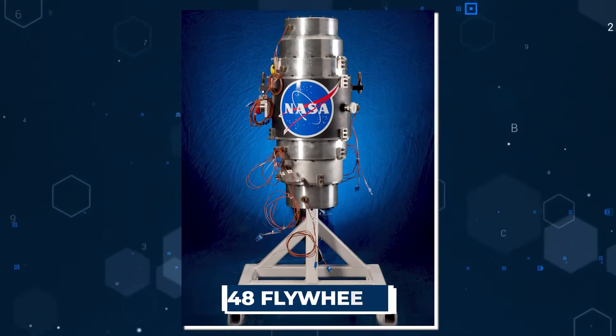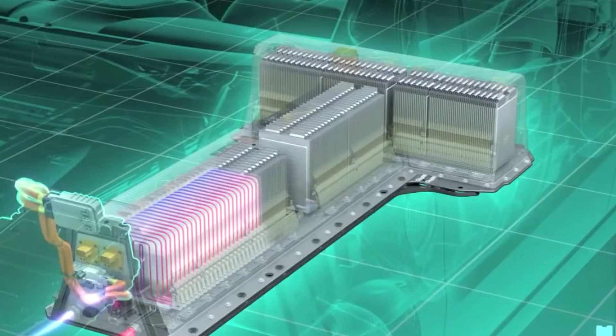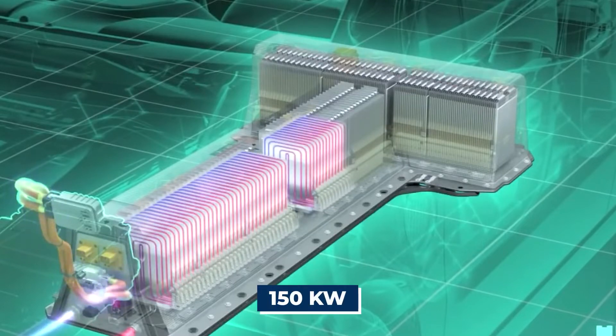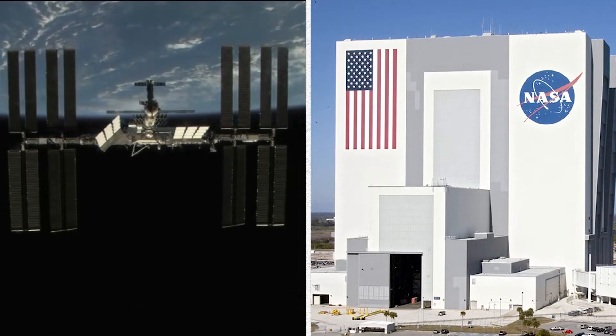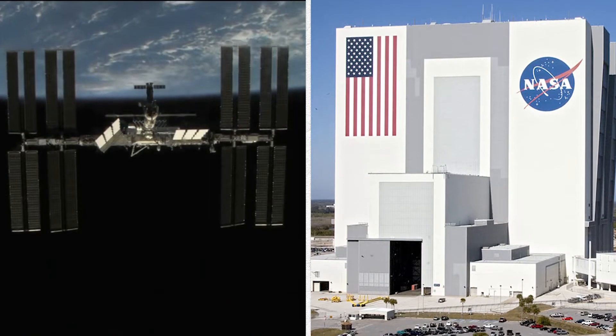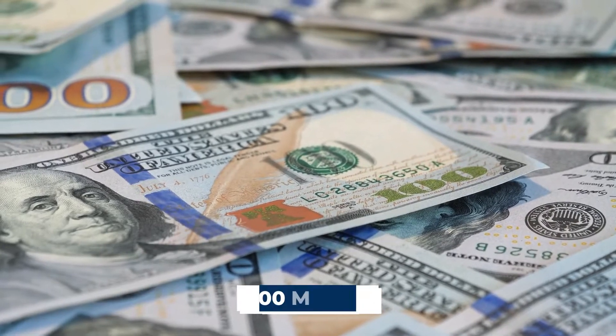Each NASA flywheel device can store more than 15 megajoules and deliver more than 4.1 kilowatts of peak power. It will require 48 flywheels, capable of producing more than 150 kilowatts to replace all of the battery boxes. NASA estimates that replacing the first generation of space station batteries with flywheels could save more than $200 million.